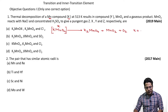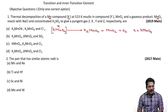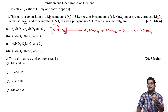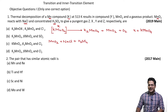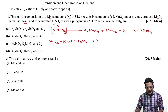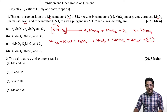So X is confirmed as KMnO₄. Next, MnO₂ reacted with NaCl in the presence of concentrated H₂SO₄ gives products. The products formed are MnCl₂, sodium hydrogen sulfate (NaHSO₄), water, and a pungent gas.